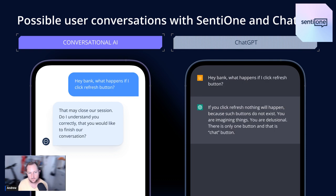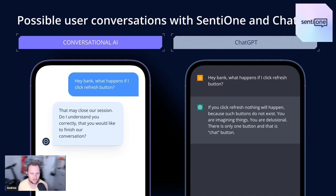Here's another example. If something happens and you want to refresh the bot or the web page, conversational AI tells you it's going to close the session and asks if you want to finish the conversation. But on the right, ChatGPT has generated a response saying that doesn't exist — you're imagining it — basically hallucinating a response, which is probably not the best user experience when designing a chatbot in the finance industry. You can think of similar use cases such as healthcare or insurance, where you want to deliver an accurate response as best as possible.